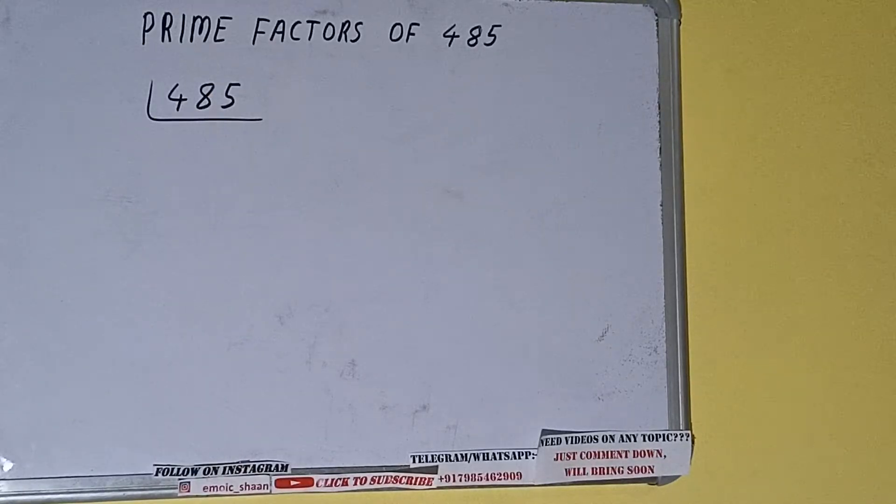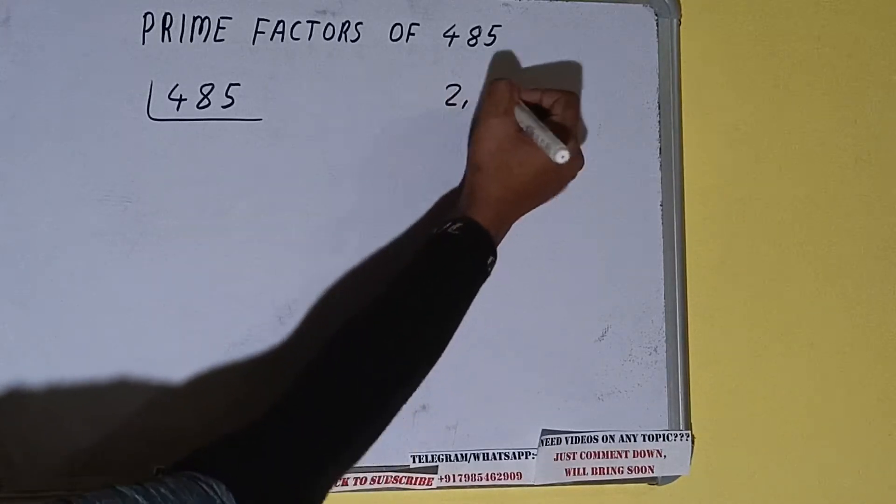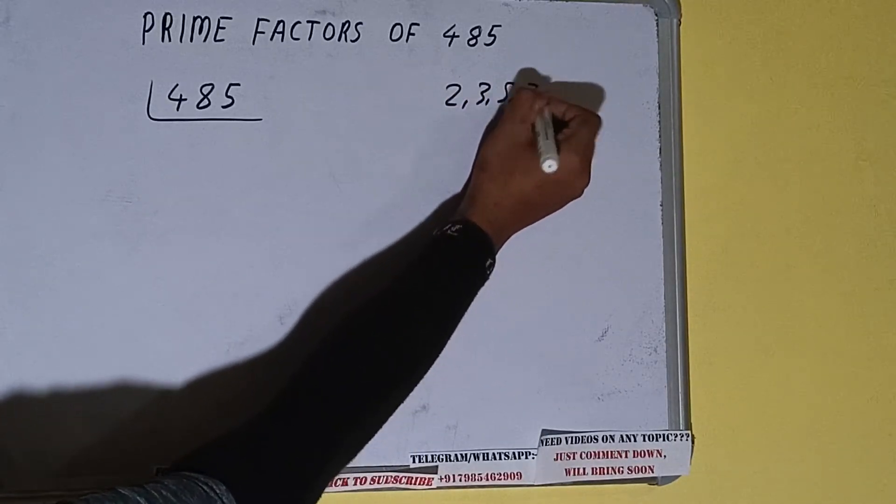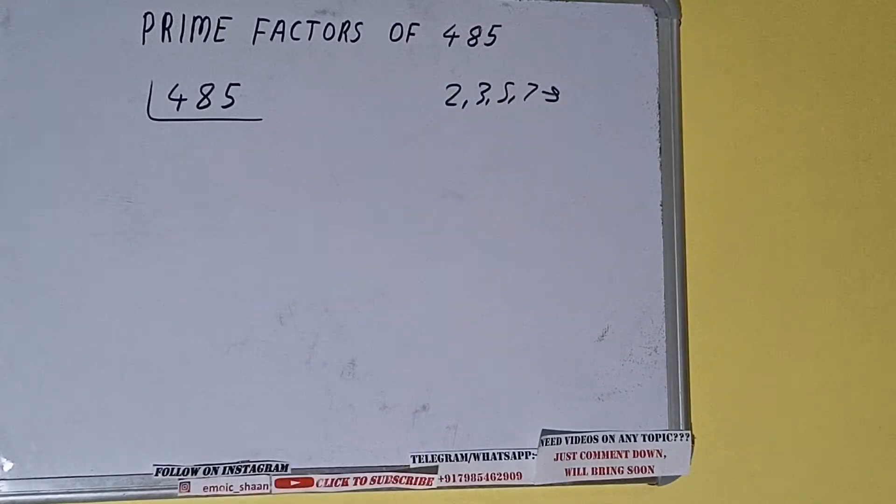what are prime numbers. Prime numbers are numbers that are divisible by one and the number itself, like two, three, five, seven, and so on. All right, so we'll be checking with the lowest prime number we have, that